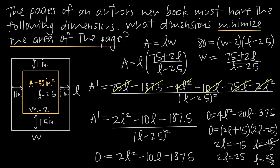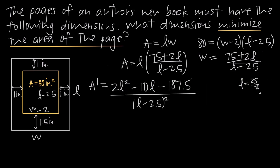We need to confirm that l equals 25/2, or 12.5, actually minimizes the area of the page. To do that, we use the first derivative test. We need to use test values on either side of l equals 12.5, plug them into the derivative, and analyze our results. Because this value is 12.5, let's use values of l equals 12 and l equals 13, since 12 is to the left and 13 is to the right of 12.5.